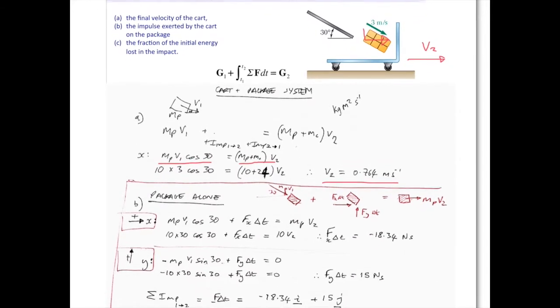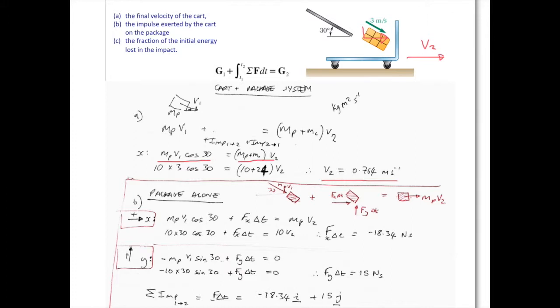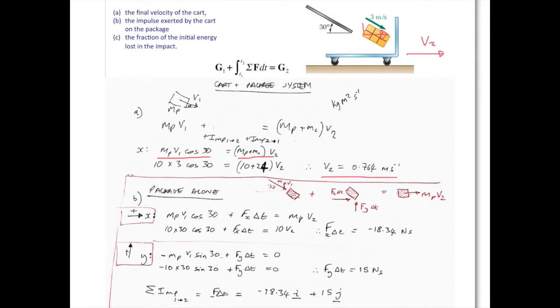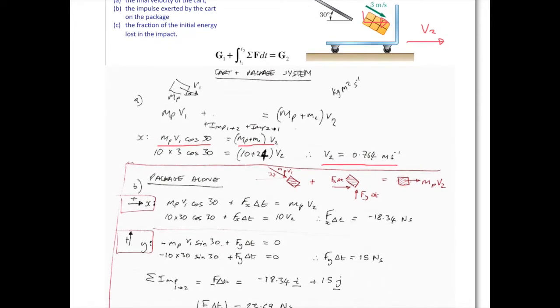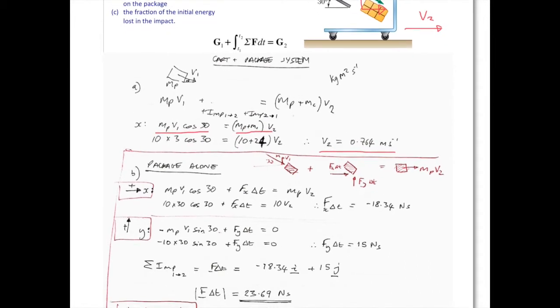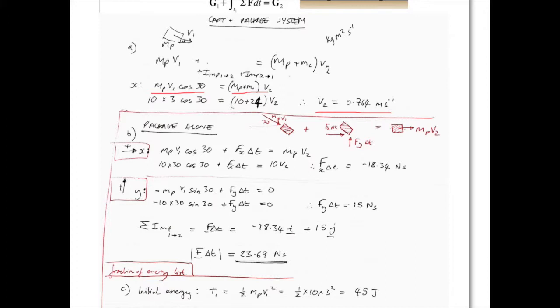Now, if you want to look at the impulse exerted by one object on the other, then you need to use this analysis. You need to just consider one of the forces. So in part b, we're asked to find the impulse exerted by the cart on the package. So we consider the package alone, and we look at the force that the cart will be imparting on the package. So we have our initial momentum of the package alone, the force that's acting on the package during the interval Δt, and the final momentum of the package.